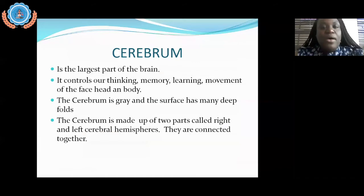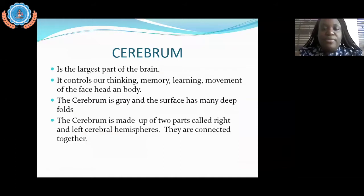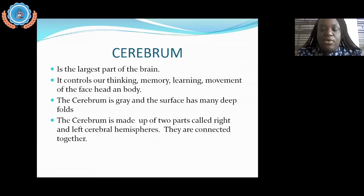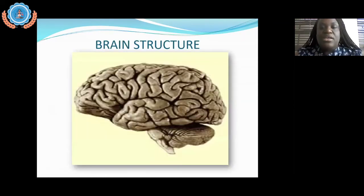The cerebrum is the largest part of the brain. It controls all of your thinking, your memory, your learning, and your facial movements — it is the control center. The cerebrum is the gray surface that has deep folds. If you look at the previous slide, you're going to see these folds that kind of look like a cauliflower.